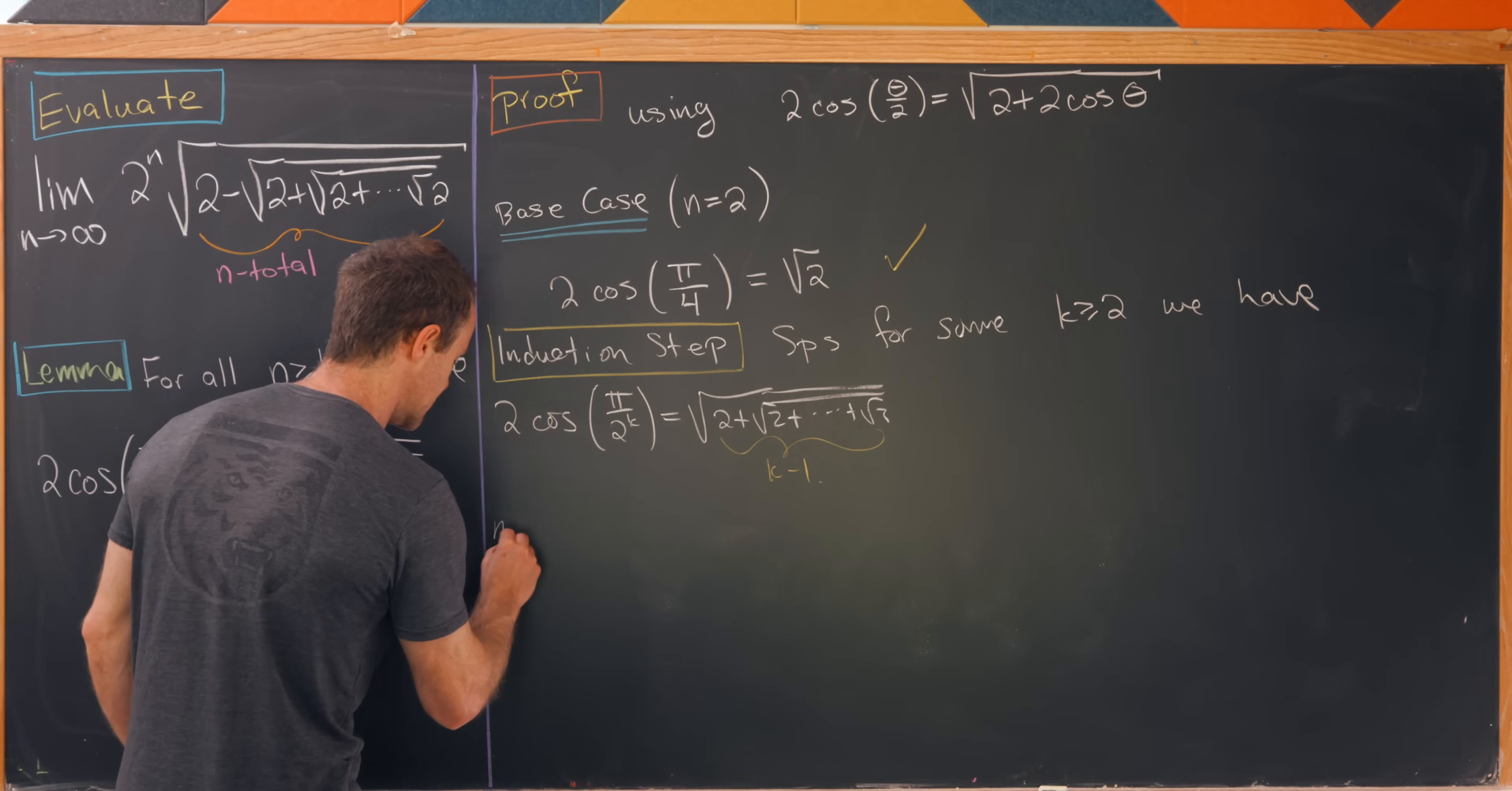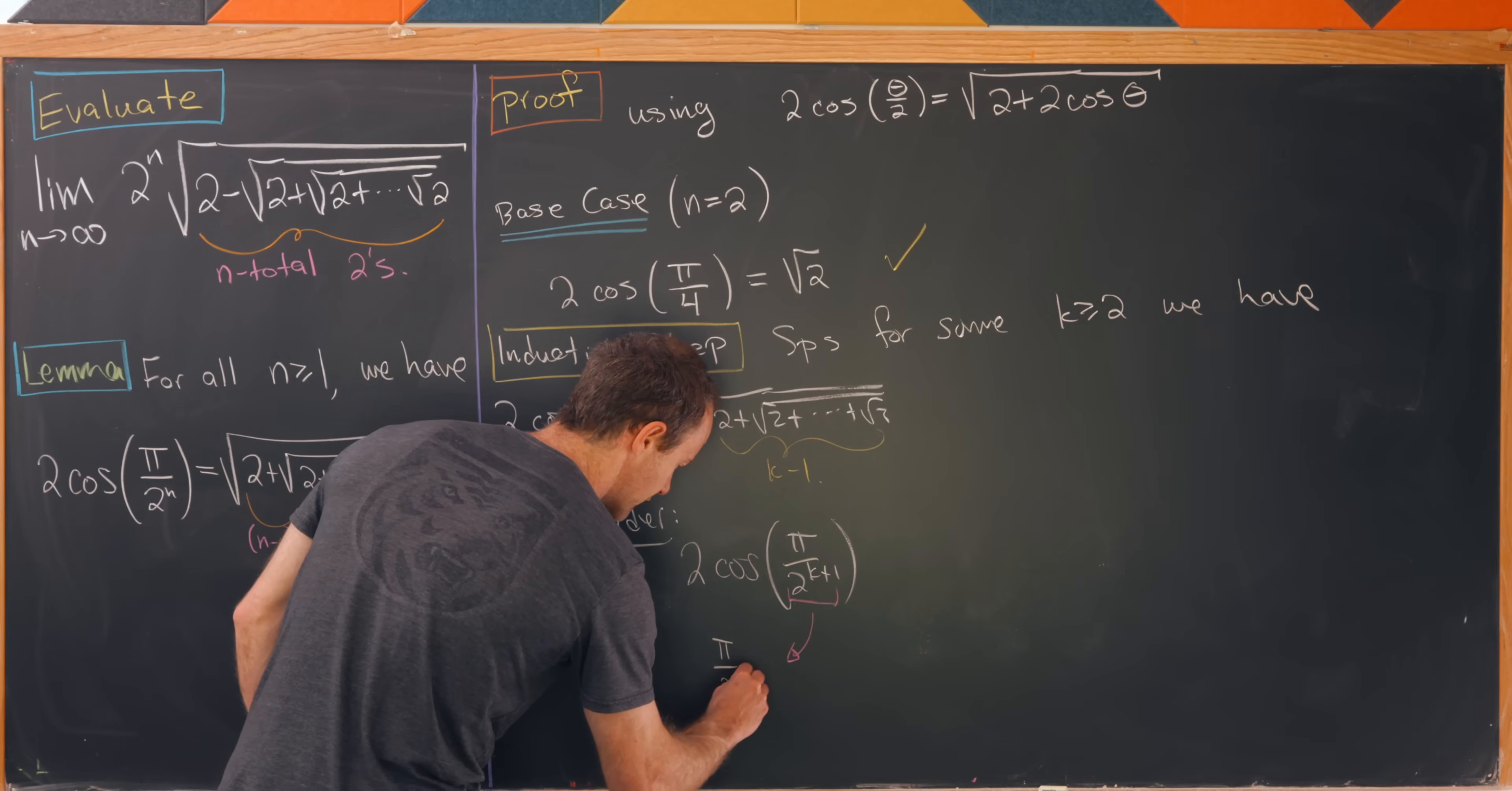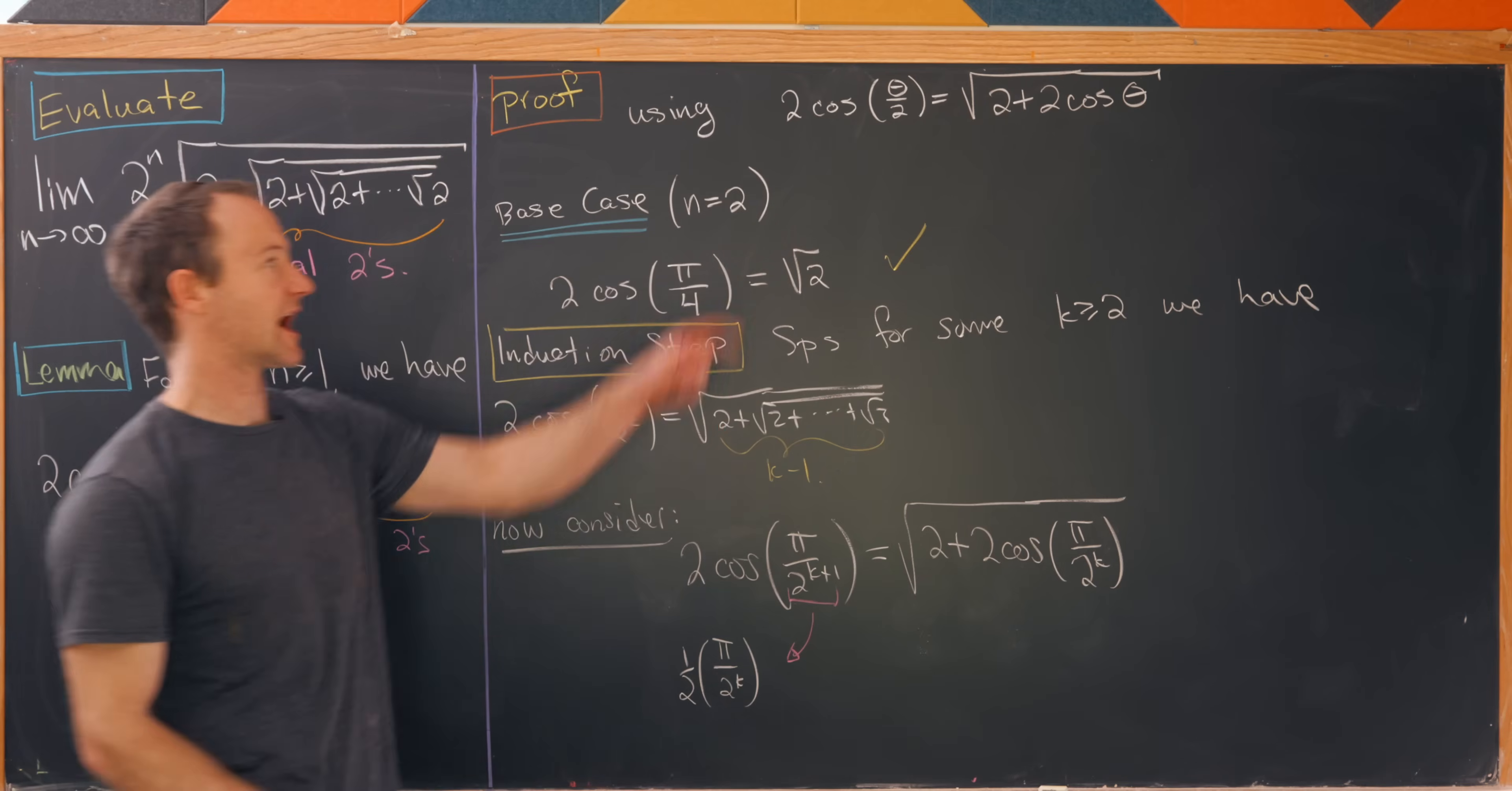Next we move on to the next case. Now let's consider 2 times the cosine of pi over 2 to the k plus 1. We'll use the fact that 2 to the k plus 1 in the denominator is the same thing as pi over 2 to the k times 1 half, meaning we can use this half angle identity. So this ends up being the square root of 2 plus 2 times the cosine of pi over 2 to the k.